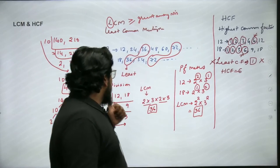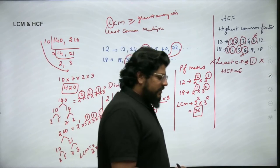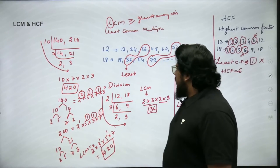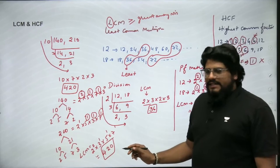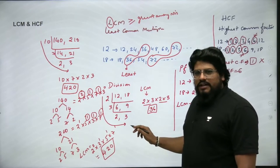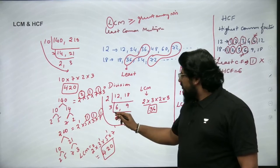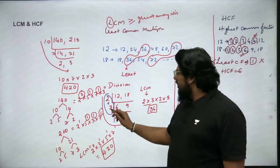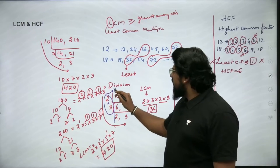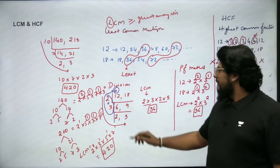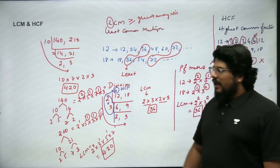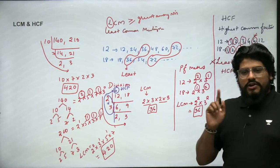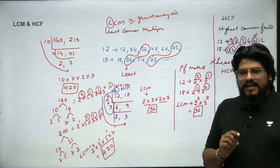We can't always list all factors, so we use the division method or prime factorization. In the division method for 12 and 18: when we divided, we had 2 and 3 as the common divisors, and 2 and 3 left over with no commons. For HCF, you do not multiply everything — you multiply only the numbers that are the common divisors. So 2 × 3 = 6, which is the HCF. For LCM, multiply all numbers; for HCF, multiply only the common ones.